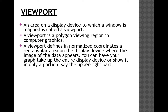A viewport is an area on a display device to which a window is mapped. In simple terms, the window defines what is to be displayed, while the viewport defines where it is to be displayed. When a window is placed on the world, only certain objects and parts of objects can be seen; points and lines outside the window are cut off.